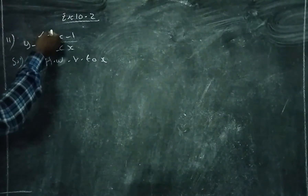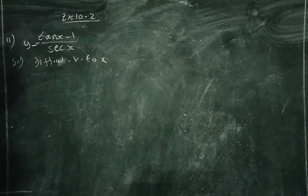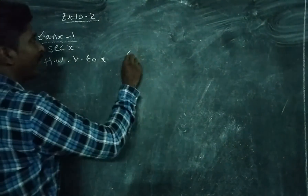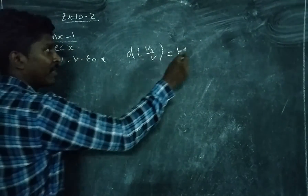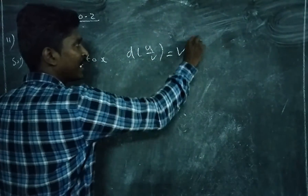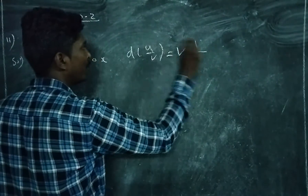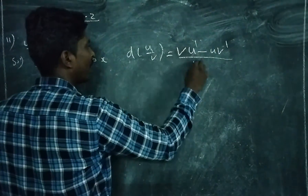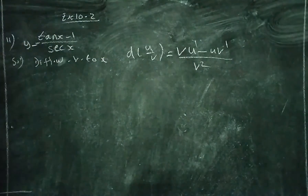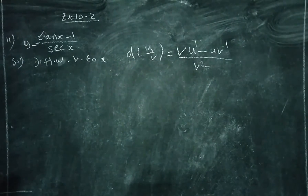You can also go by the u by v method — the quotient rule. In u by v, you take the denominator value times the derivative of the numerator, minus the numerator times the derivative of the denominator, all divided by the denominator squared.